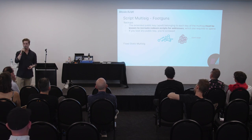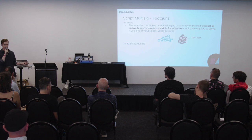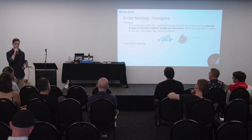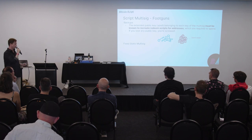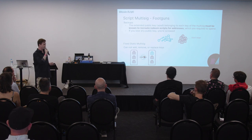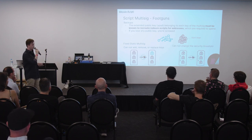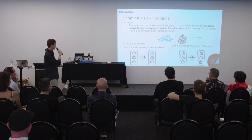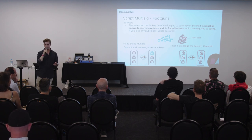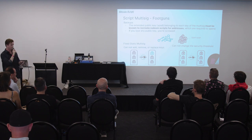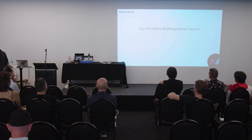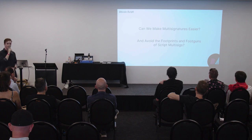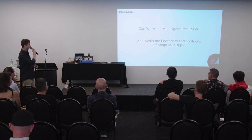Script multi-sigs are also very static. If you lose a key, you're not able to add a new one in — you can't replace it. If you want to add a new key, you're going to have to sweep your whole multi-sig and make a whole new one. You cannot add, remove, or replace keys, and you also cannot change the security threshold. So these are some pretty bad user experience pain points for script multi-sig. Can we make multi-signatures easier and avoid the footprints and foot guns of script multi-sig as we do so?